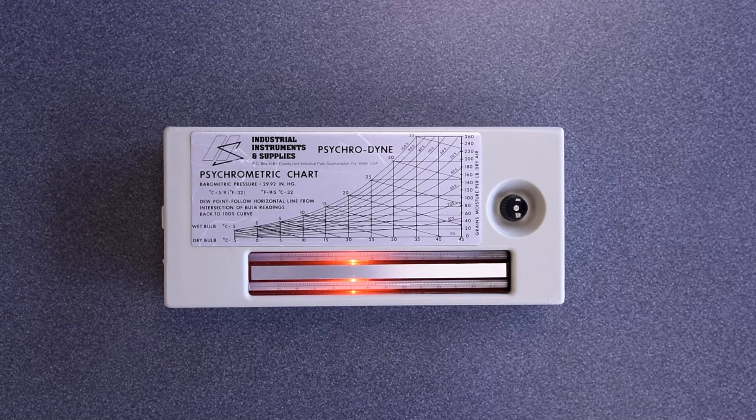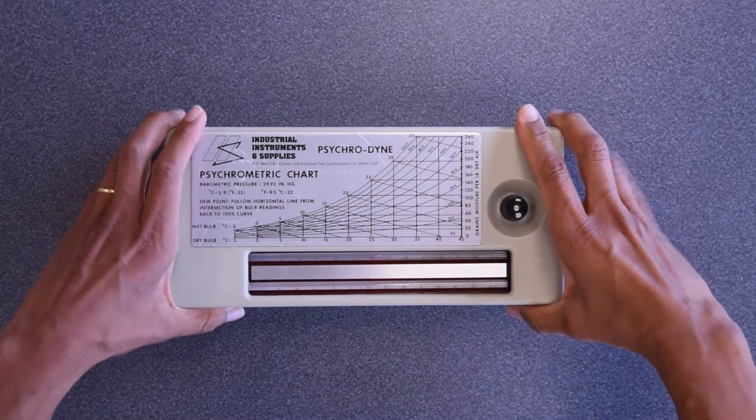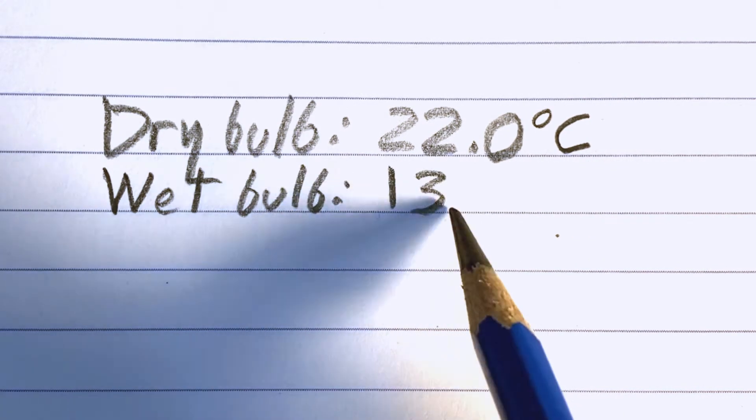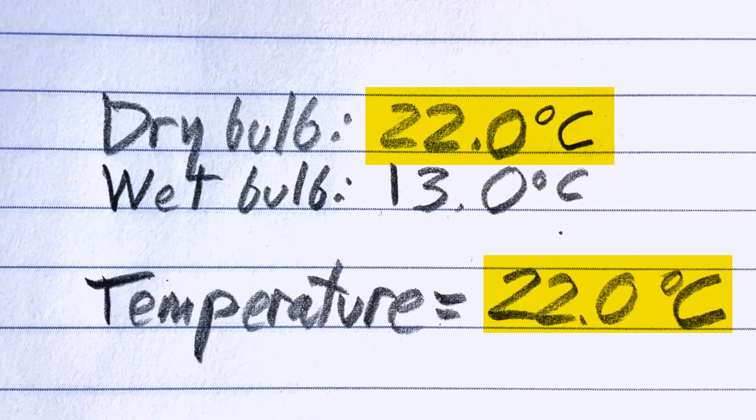Once the wet bulb temperature has settled, turn the instrument off by rotating the knob clockwise. Immediately record the values of both the dry and wet bulb temperatures. The dry bulb temperature is the temperature of the space.